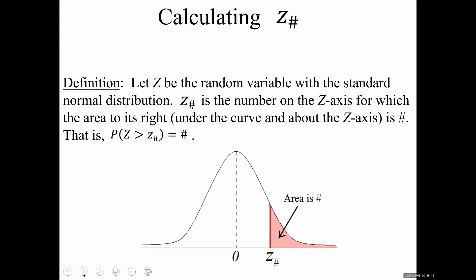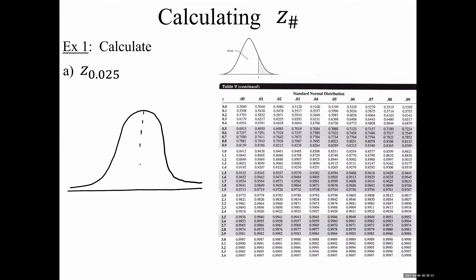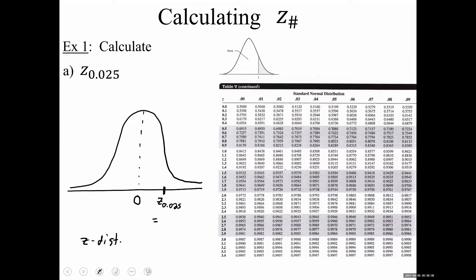We'll do six examples calculating this. For example 1a, finding z_0.025: first draw the standard normal distribution — a bell curve with zero in the middle, labeled z distribution. The number we're looking for is somewhere on the right side of zero; label it z_0.025. Going up to the curve and shading to the right, that area equals the subscript: 0.025.